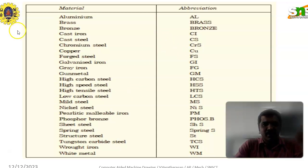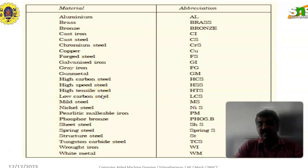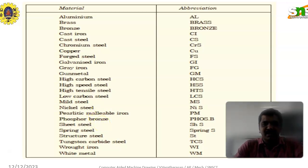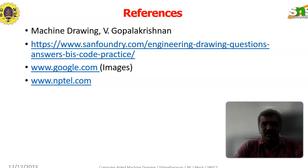Cast steel, chromium steel, copper, forged steel, galvanized iron, gray iron, gun metal, high carbon steel, high speed steel, high tensile steel, low carbon steel, mild steel — MS. Nickel steel, malleable iron, phosphor bronze, sheet steel, spring steel, structural steel, tungsten carbide steel, wrought iron, white metal — these are all the things we are using in the abbreviation part.